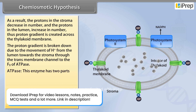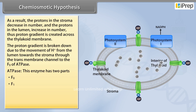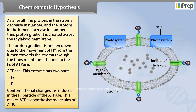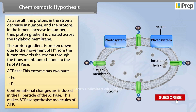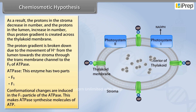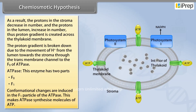ATPase has two parts: F0 and F1. Conformational changes are induced in the F1 particle of the ATPase, which makes ATPase synthesize molecules of ATP.